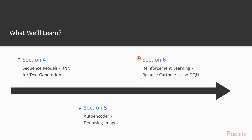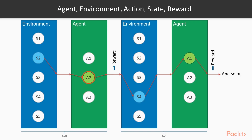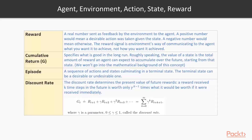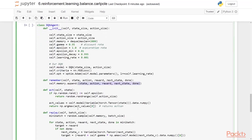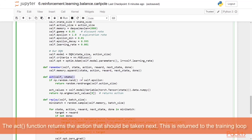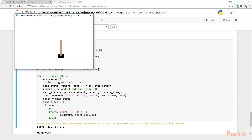And finally, in the last section, section 6, Reinforcement Learning: Balance a Cart Pole using DQN. We touch upon reinforcement learning and highlight the unique characteristics of this kind of learning with concepts like environment, agent rewards, and actions. We build an RL model using DQN, and as a project, we train a cart to balance a cart pole.